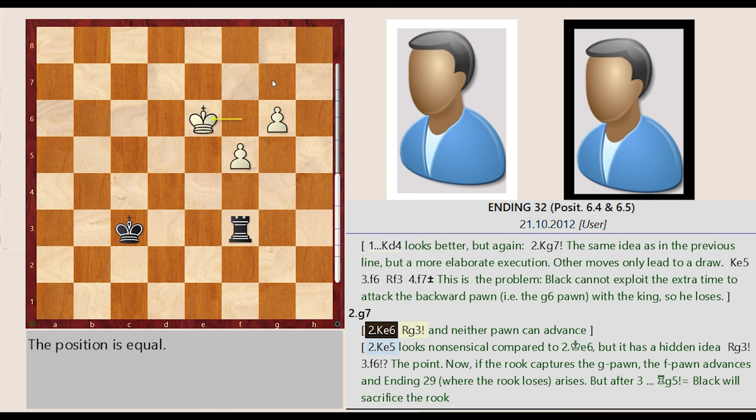King f6 e6, Rook f3 g3, and neither pawn can advance.